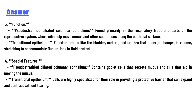Fourth, special features: pseudostratified ciliated columnar epithelium contains goblet cells that secrete mucus and cilia that aid in moving the mucus. Transitional epithelium cells are highly specialized for their role in providing a protective barrier that can expand and contract without tearing.